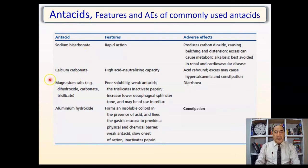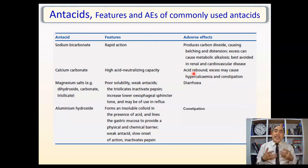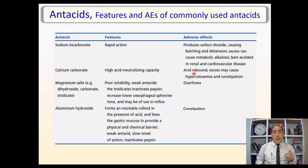Examples include sodium bicarbonate, calcium carbonate, magnesium salts, and aluminum hydroxide. Sodium bicarbonate acts very fast but produces carbon dioxide causing belching and distension; excess use causes metabolic alkalosis and should be avoided in renal and cardiovascular disease due to sodium load increasing blood volume and preload on the heart. Calcium carbonate has high acid-neutralizing capacity but causes acid rebound — where after relief, acid returns worse than before — and excess use causes hypercalcemia and constipation.